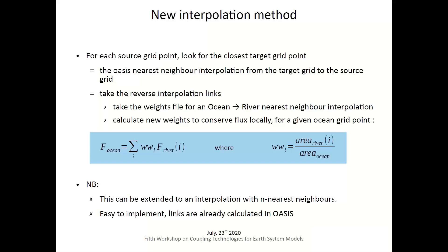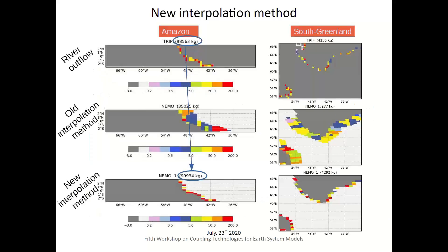The idea is that we don't want to get one value on each unmasked target grid point, but instead we need every unmasked source grid point to be taken into account, without requiring a value on each target point. To do that, we simply take the reverse interpolation weights — the interpolation from the target grid to the source grid — and calculate new weights that ensure conservation by weighting the area of the input grid to the output grid. This method can be extended to several nearest neighbors and is easy to implement since links are already calculated in OASIS.